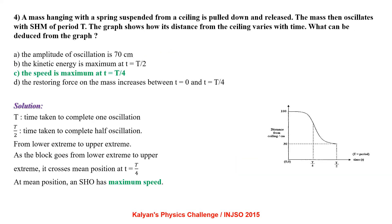A mass hanging with a spring suspended from a ceiling is pulled down and released. The mass oscillates with SHM of period T. The graph shows how its distance from the ceiling varies with time. Capital T is the time for one oscillation. The time for half an oscillation is T by 2, during which the block goes from lower extreme to upper extreme. It crosses the mean position at T equal to T by 4, and at the mean position a simple harmonic oscillator has maximum speed. So option C is correct.